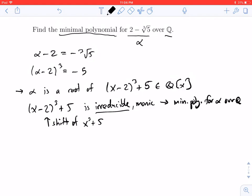And x³ + 5 is irreducible by Eisenstein's criterion with p = 5. And we know that if you shift a polynomial, irreducibility or reducibility is preserved.